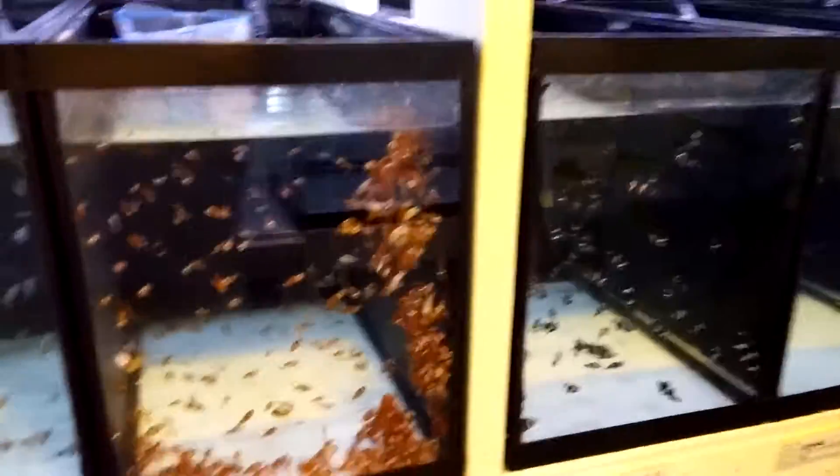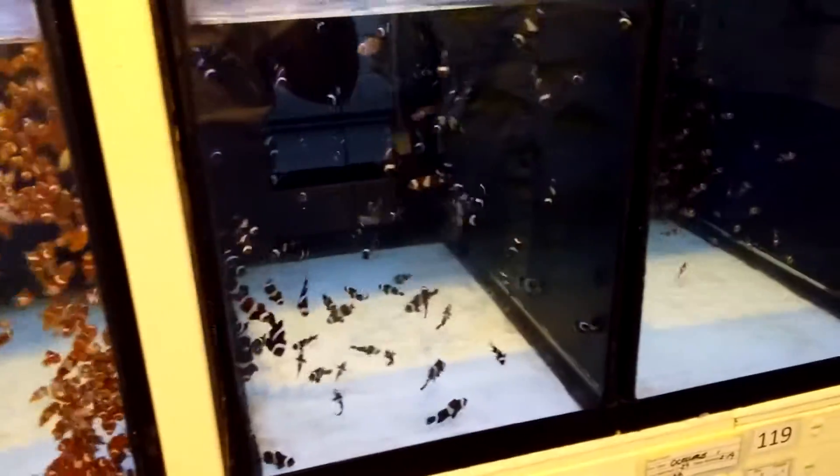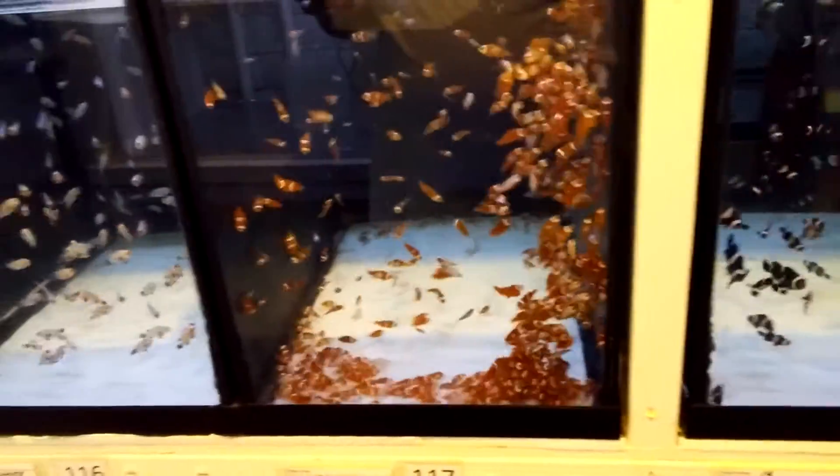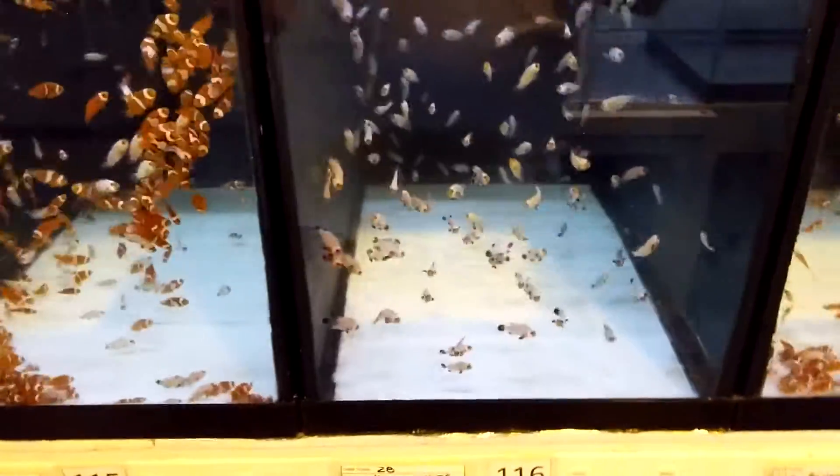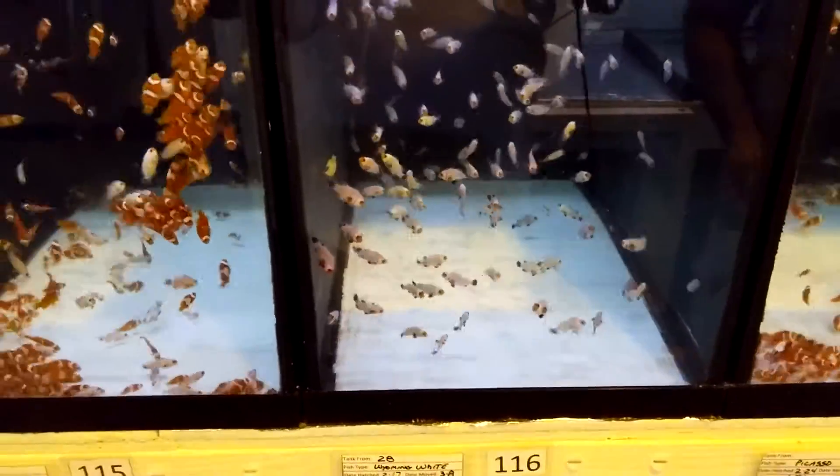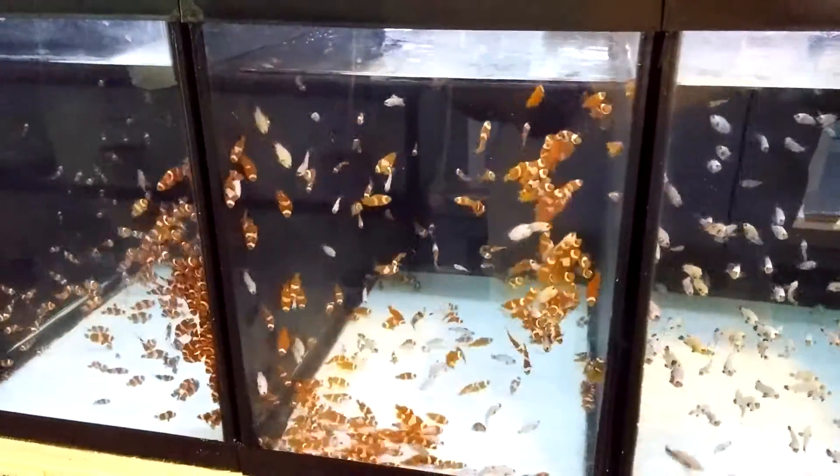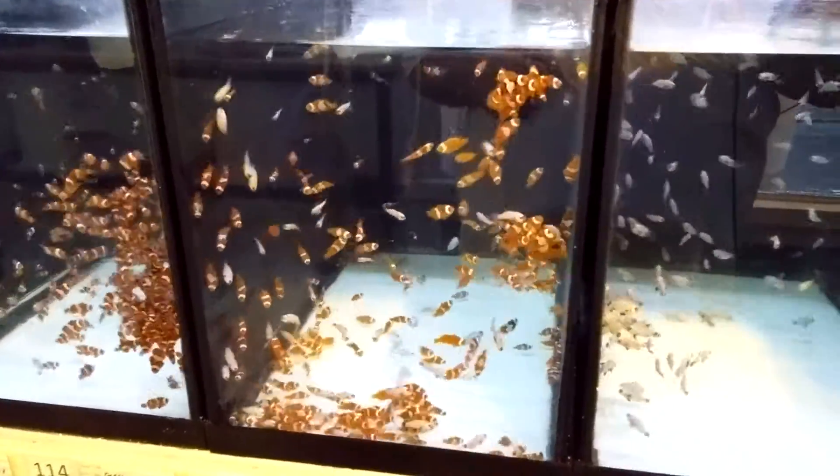And you have all the different varieties in these grow-out tanks too, right? Right. We're looking at Picassos, Wyoming Whites right over here. A lot of Ocelaris. We have some Mocha fish. We have some extreme Nisberg Mochas. We have a lot of black and whites.